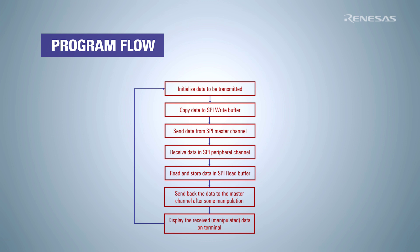In our application, we start by setting up some data that needs to be sent over SPI. We then copy this data into the SPI write buffer and send it through the master channel. The slave channel receives the data and stores it. After that, we make some changes to the received data, such as adding a constant value, then send the modified data back to the master channel and display it on the terminal.